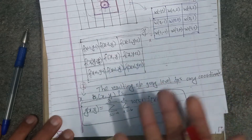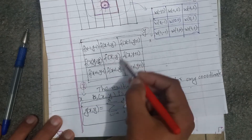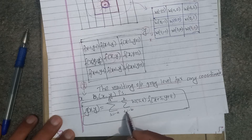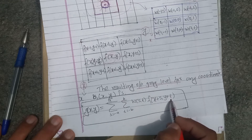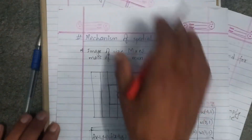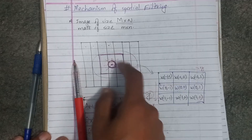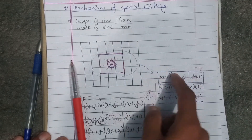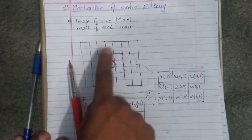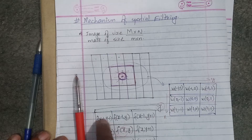The resulting output gray level for any coordinate (x, y) is represented as g(x, y). It is computed as the summation from s = −a to a and t = −b to b of w(s, t) multiplied by f(x+s, y+t). This means for each pixel, we take its neighborhood, multiply corresponding mask coefficient values, and sum them — for example, w(−1,−1) × f(x−1, y−1), and so on.